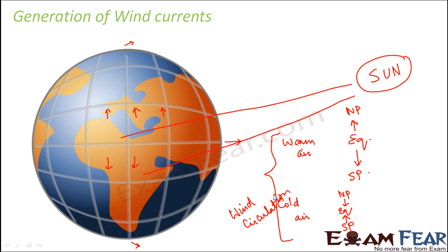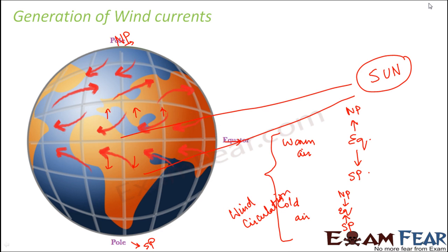Looking at this logic, we understand that warm and cold air should be flowing in the north-south direction, because the air moves from the equator towards the south pole or north pole. But when we actually look at the direction, we see it is not exactly north or south. Instead, it is slightly tilted — neither exactly north nor exactly south, somewhere in between.